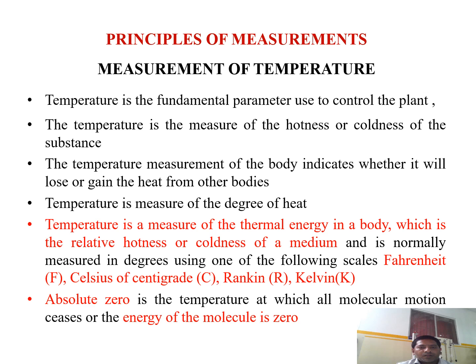What are the principles of measurement? Temperature is a fundamental parameter used to control the plant. Temperature is a measure of the hotness or coldness of substances. The temperature measured of a body indicates whether it will lose or gain heat from other bodies. Temperature is a measure of the degree of heat and of the thermal energy in a body, normally measured in degrees on one of the following scales.